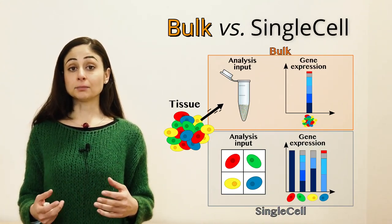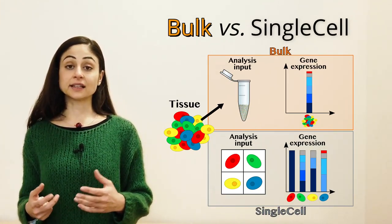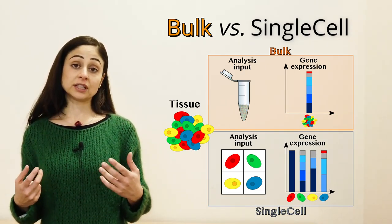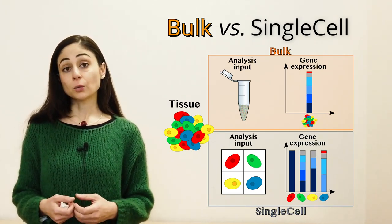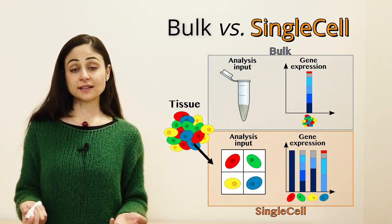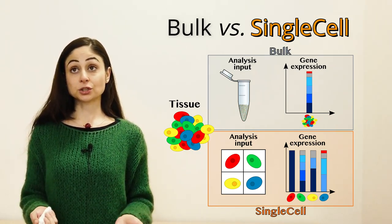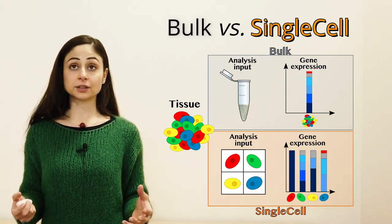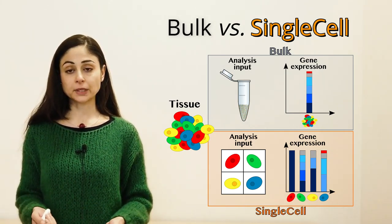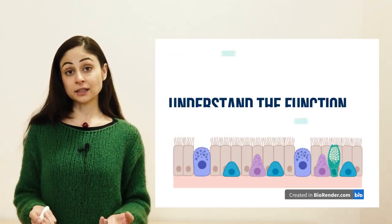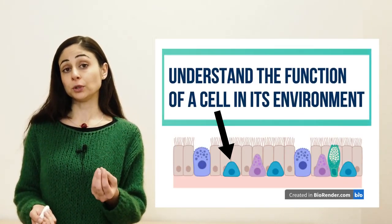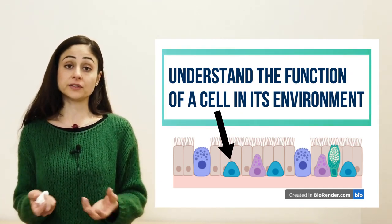Indeed, the standard bulk analysis can only get an average picture of the biological details of many cells, losing the heterogeneity information. With single-cell technology, we can reveal biological differences between cells, identifying subpopulations to unravel multilayered heterogeneity in tissues previously considered invariable. In this way, we can reach a better understanding of the function of a single cell or a small population of cells in the context of its environment.